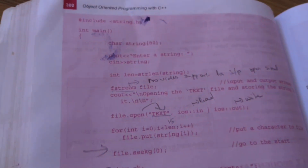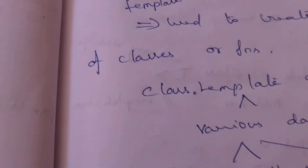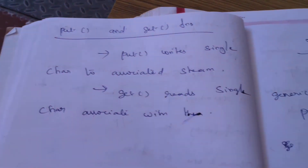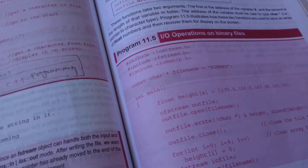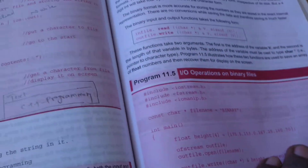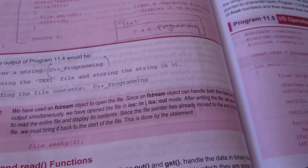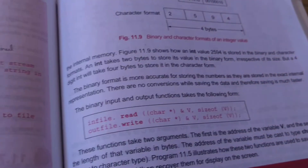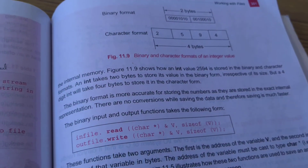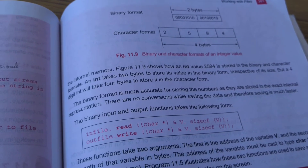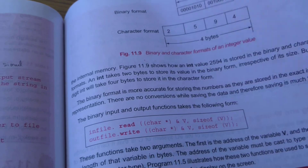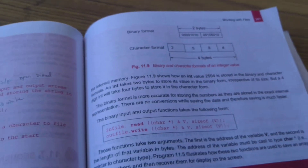To summarize the input and output methods: put and get are used for single character operations, while read and write are used for binary blocks of data.